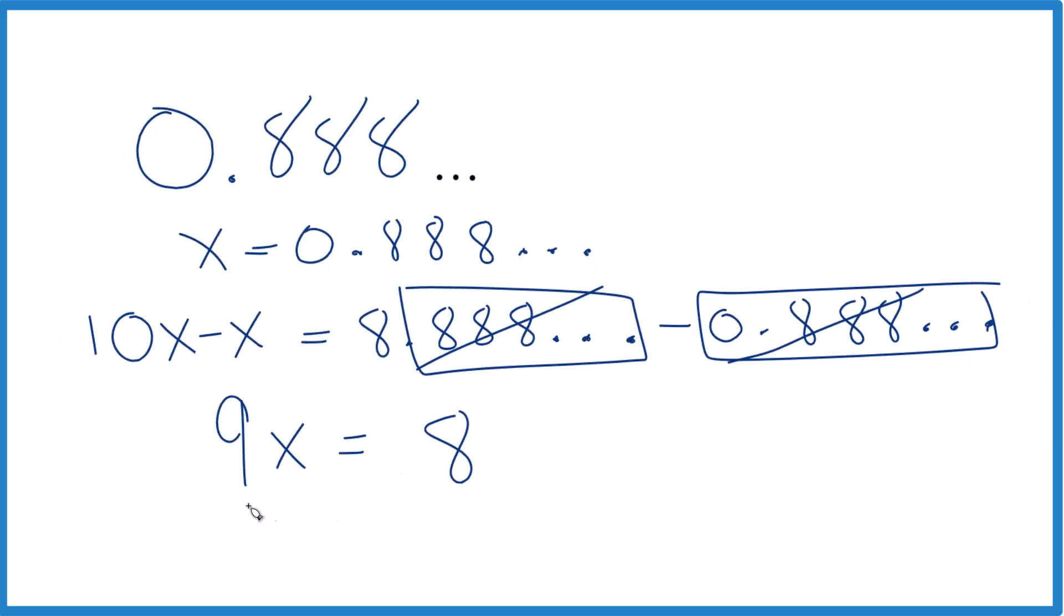Now it's pretty easy. Divide both sides by 9. 9 over 9, that's 1. So we end up with x equals 8/9. That's the fraction.